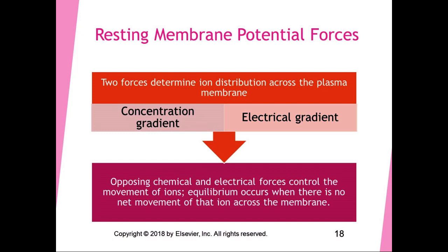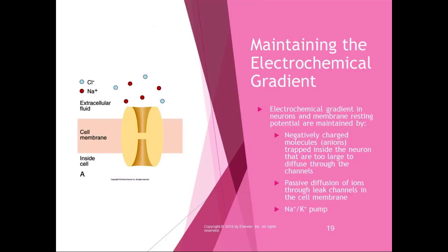Normally there are more potassium ions inside the cell and more sodium ions outside the cell. There are also large negative ions — anions — that are trapped inside the cell and unable to diffuse across the membrane through channels because they are too big. These trapped anions keep the inside of the cell more negative than the outside, helping maintain the electrochemical gradient.